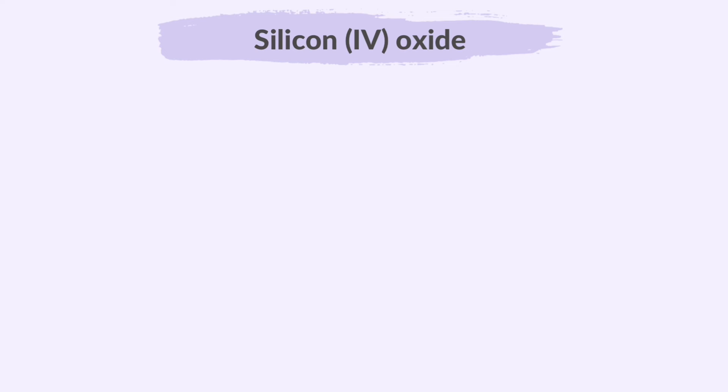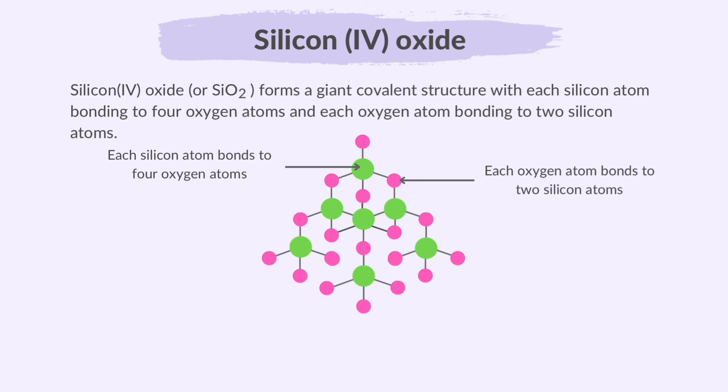Now let's take a look at the giant covalent structure of silicon dioxide or SiO2. Silicon dioxide forms a giant covalent structure with each silicon atom bonding to four oxygen atoms and each oxygen atom bonding to two silicon atoms. Silicon dioxide has a structure similar to diamond with interconnected tetrahedral shapes.